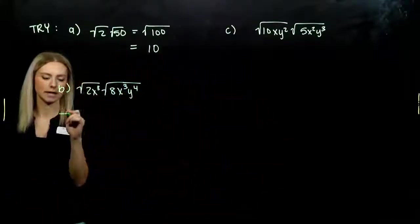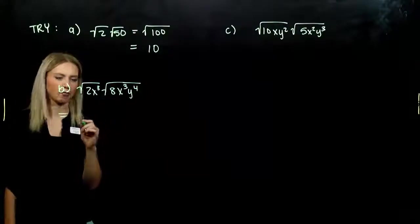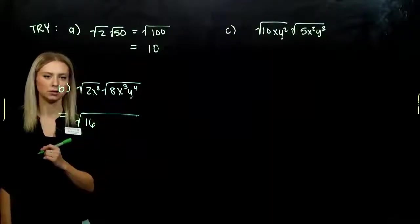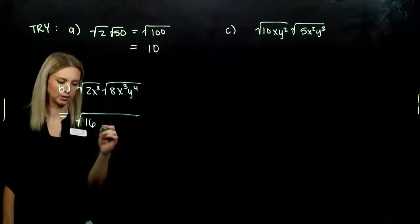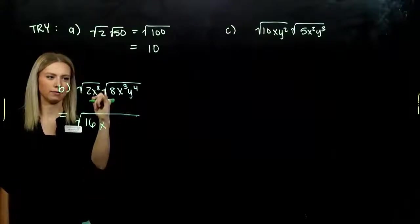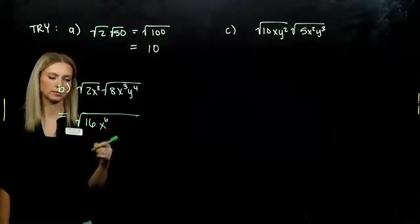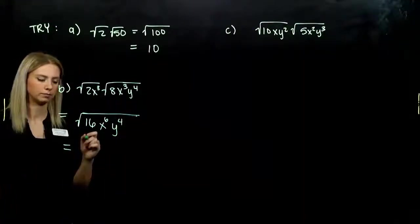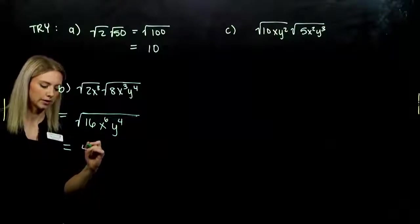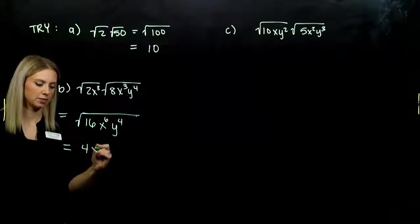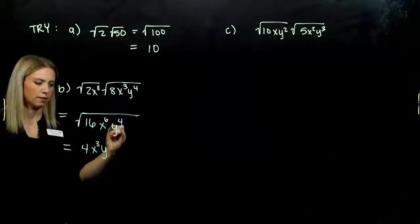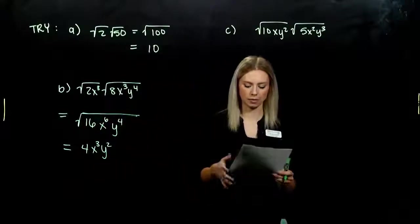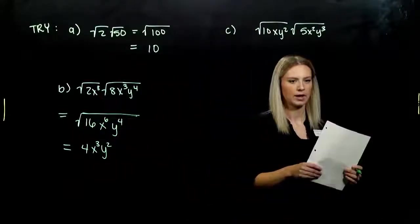For part b: √(8x³) · √(2x³y⁴). It's usually helpful to multiply everything together first to see what we're working with. 8 times 2 gives 16, which is a perfect square. How many factors of x? 3 plus 3 is 6 — even, great. And y to the fourth — even as well. So everything is going to evaluate out. Square root of 16 is 4; 6 divided by 2 gives x³; 4 divided by 2 gives y². We can always check by squaring our answer.